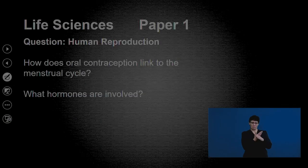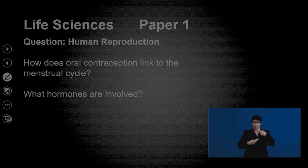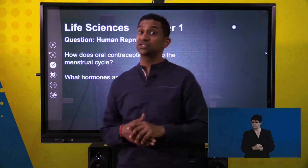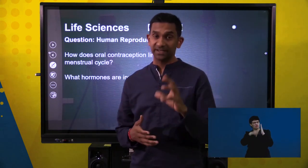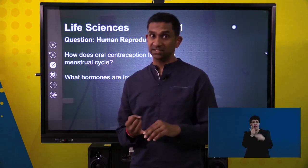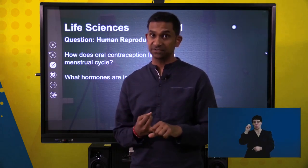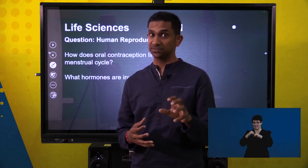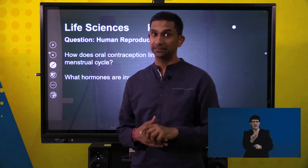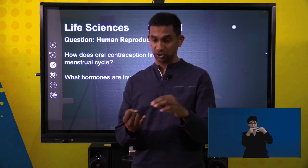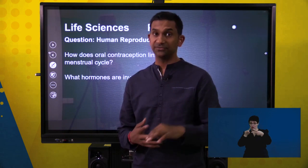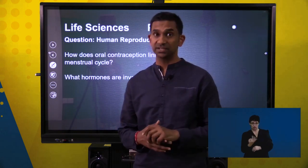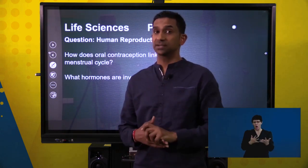The learner's question: How does oral contraception link to the menstrual cycle, and what hormones are involved? This question links to the endocrine system, the reproductive system, and the concept of negative feedback. We need to bring those three concepts together. Let's unpack what contraceptive pills are, identify the hormones, and see how the contraceptive pill effectively prevents conception.